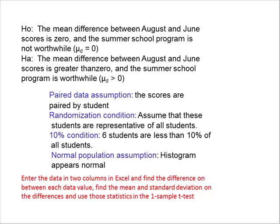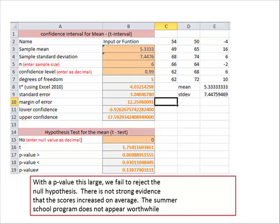With 10% condition, six students are less than 10% of all students, and the normal population assumption histogram appears to be not normal. So we're going to enter the data into two columns in Excel and find the distance between each data value, and that's going to be in a third column, and then we find the mean and the standard deviation on the differences and use those in the t-test.